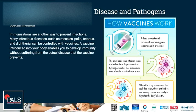There are specific methods of preventing diseases, and these include immunization by vaccines. Many infectious diseases, such as measles, polio, tetanus, and diphtheria, can be controlled with vaccines. A vaccine introduced into your body enables you to develop immunity without suffering from the actual disease that the vaccine prevents.